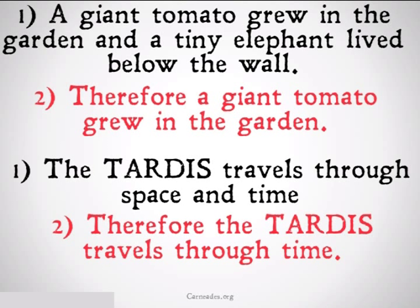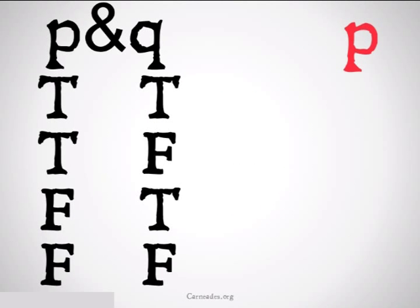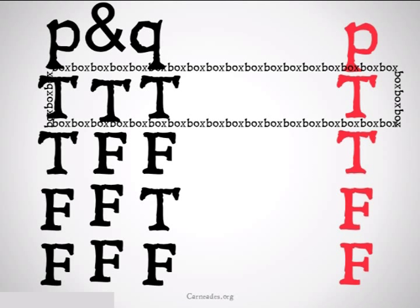Once again, this is just the opposite of the conjunction rule that we learned about last time. Let's take a look at the truth table. P and Q, therefore P. We fill in our truth tables below, and we look at the top row to see that the only time the premise is true is a time when the conclusion is also true. So this is a valid form of argument, which should make sense.